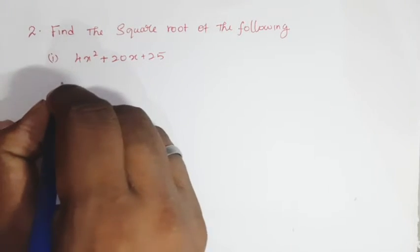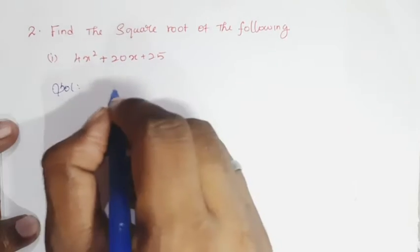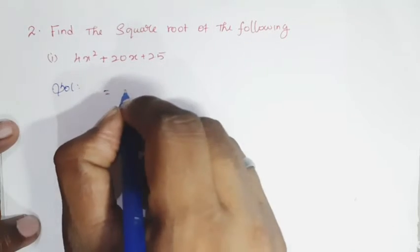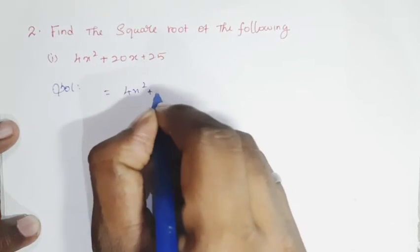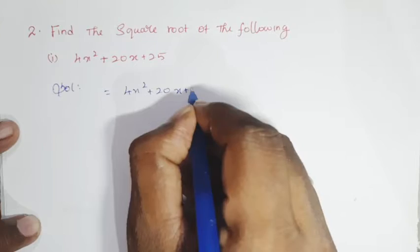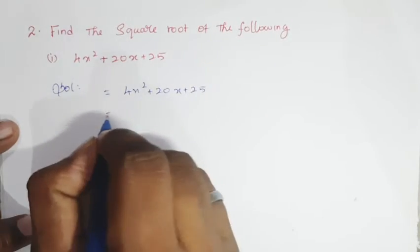So for 4x² + 20x + 25, we'll apply the formula method to find the square root.